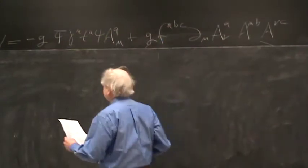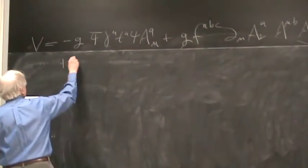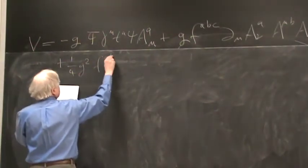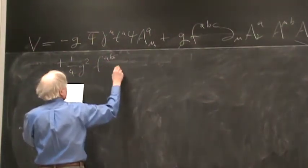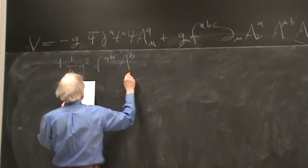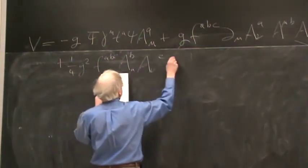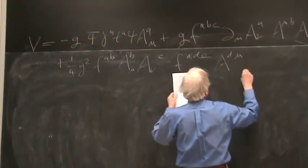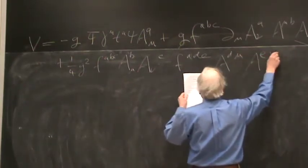And then there's another term, which is proportional to G squared, f abc a b mu a nu c, f ade a d mu a e nu.